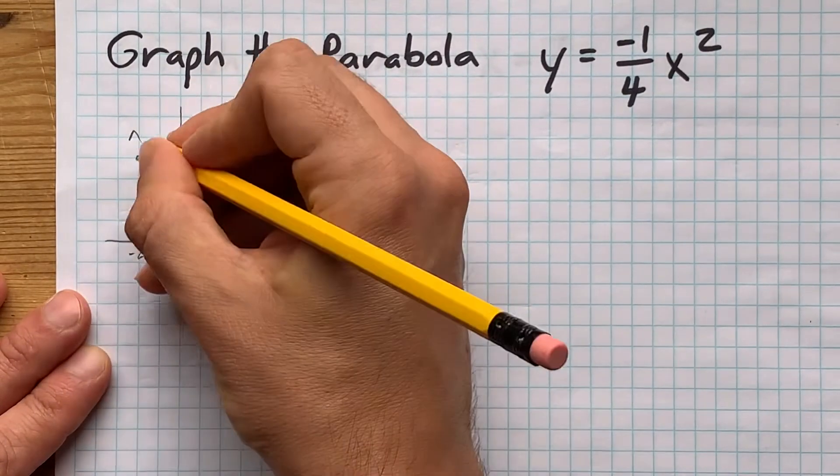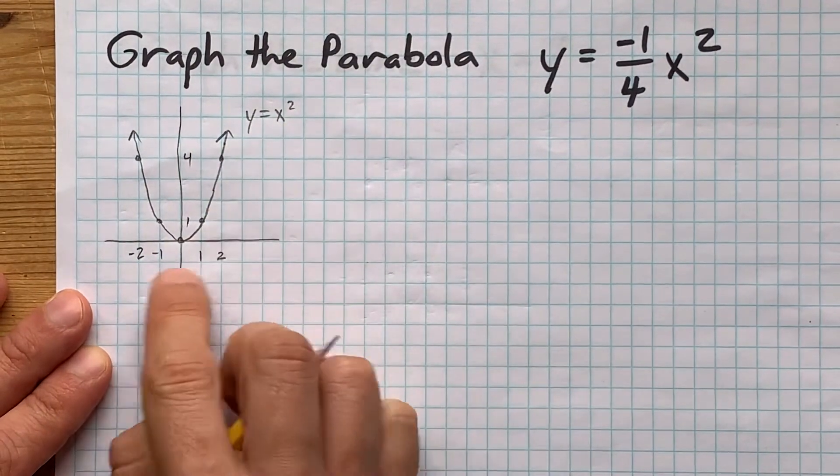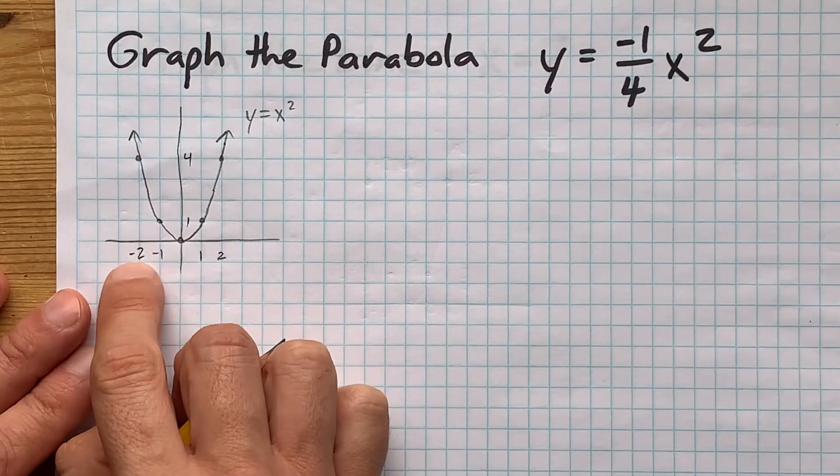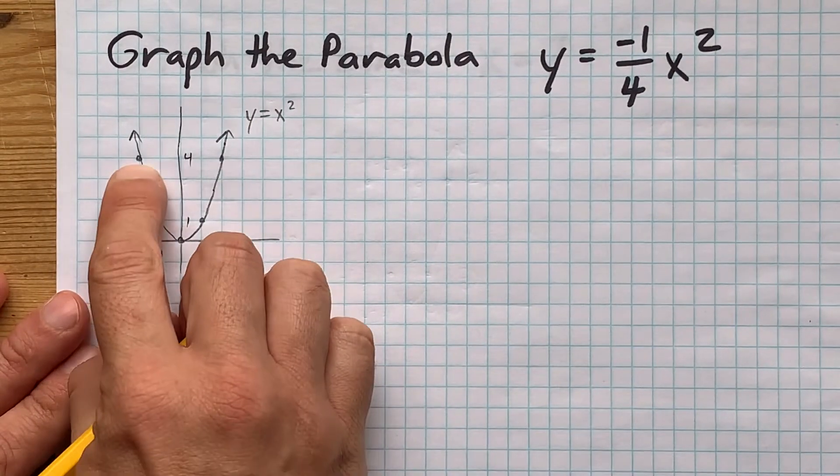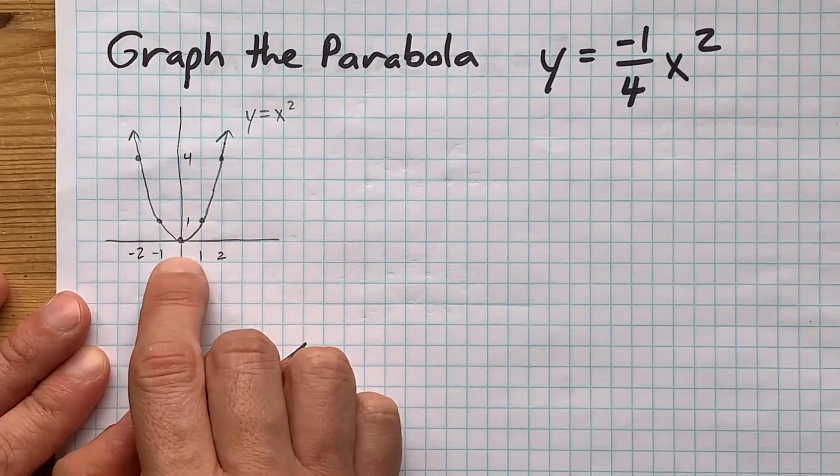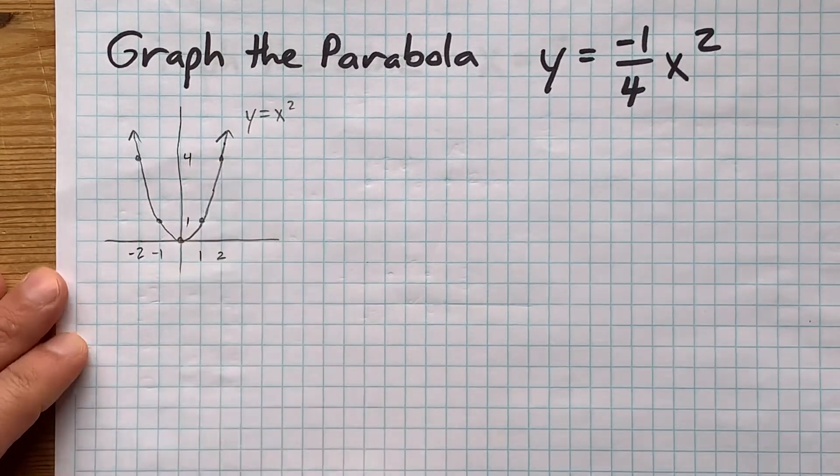Now I've memorized those points personally, but if you haven't, we're just using whole numbers on either side of 0. When you square the number on the x-axis, here it's negative 2, you get the number on the y-axis, which is 4. Negative 1 squared is 1, 0 squared is 0, 1 squared is 1, 2 squared is 4.